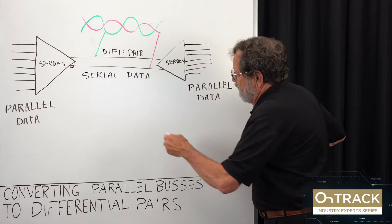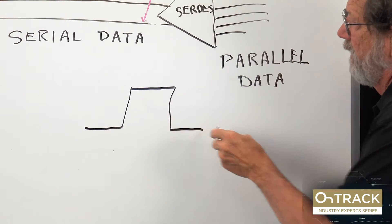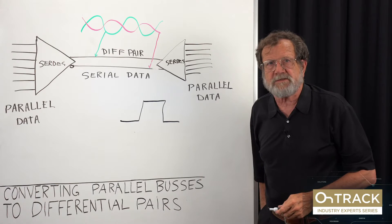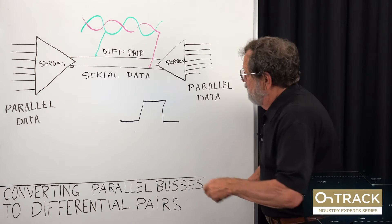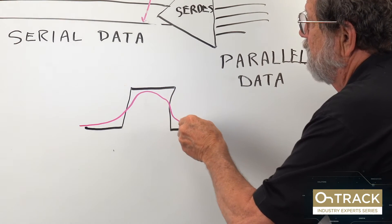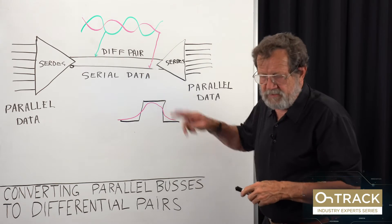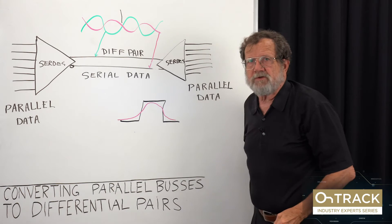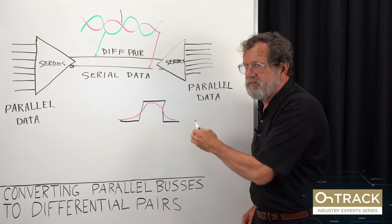And how accurately things operate depends on how sharp that edge is. If it gets degraded because the path is long and gets to looking like this, we start to get errors. The difference is, with differential signaling, we decide when we have a logic state change when those two cross. We don't have to worry about how sharp the edges are.